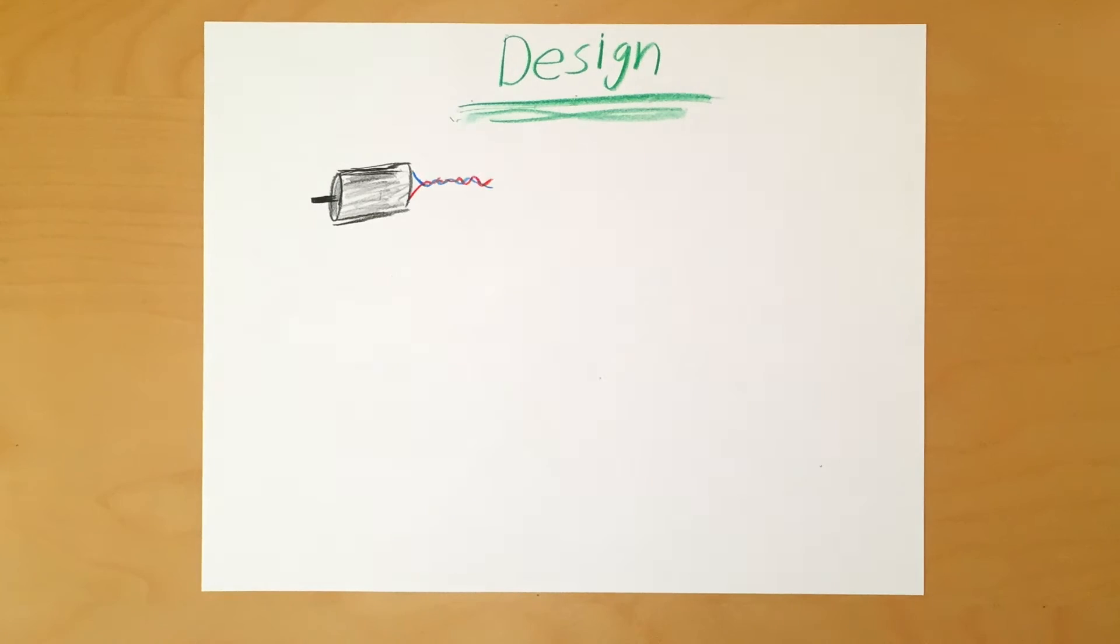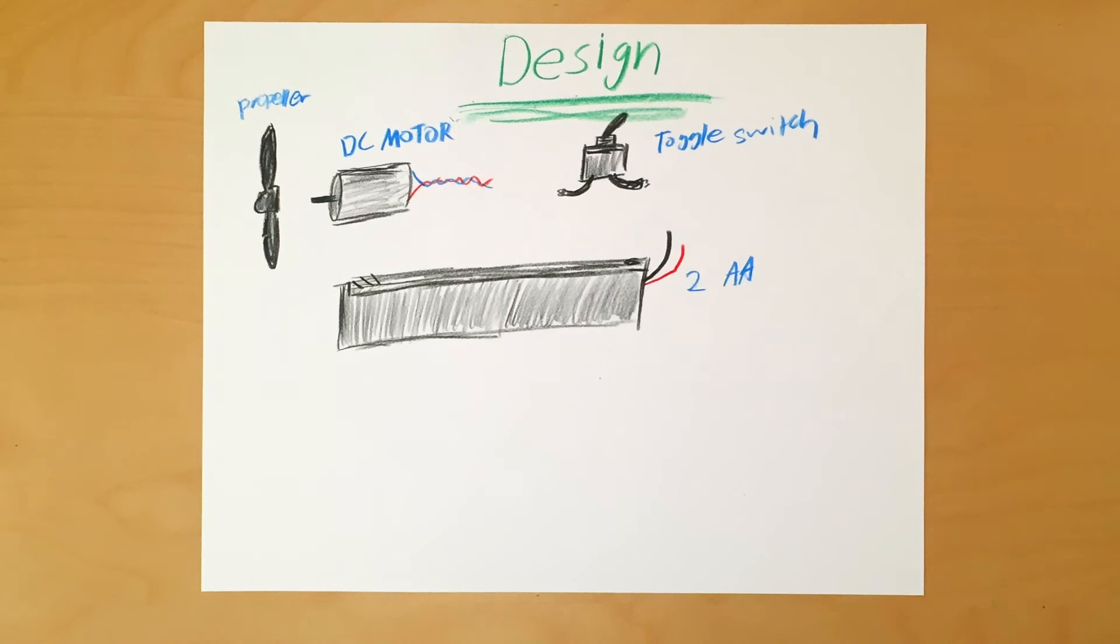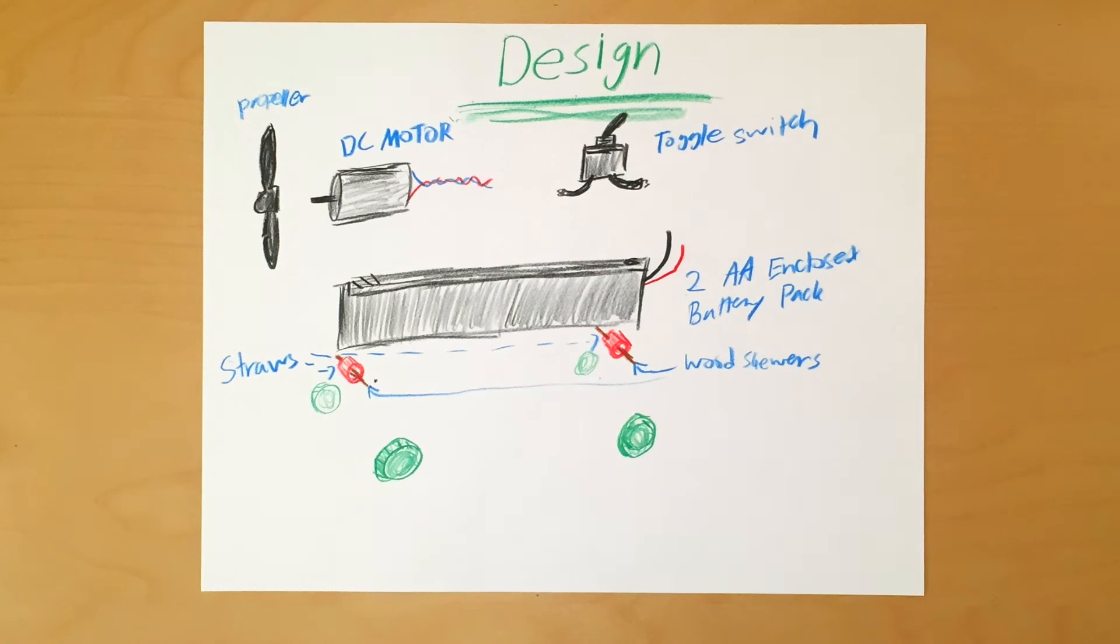The design is pretty simple. The propeller fits onto the DC motor. The motor and the switch are both attached to the top of the battery pack. Two pieces of the drinking straws are attached on both ends of the bottom of the battery pack. Skewers go through the drinking straws and we attach the bottle caps to the end of the skewers. The skewers and caps act as a wheel and axle.